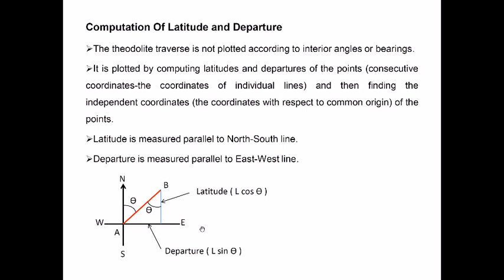Let's see the whole process again. The first step is to find out the latitude and departure. If the traverse is not plotted according to interior angles or bearings, that means it must be plotted according to azimuths. If it is done in bearings or interior angles, you can still use this method by first calculating the azimuths or bearings, or setting one direction as reference and then taking all the angles in reference to that same reference direction. Then you plot the traverse by computing latitudes and departures, check if their summation is zero, apply corrections, and balance the traverse.